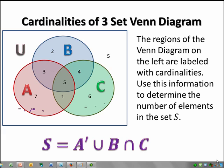The regions of the Venn diagram on the left are labeled with cardinalities. This means that the numbers indicate the number of elements that are in each region. Use this information to determine the number of elements in the set S. S is the set A complement union B intersect C.